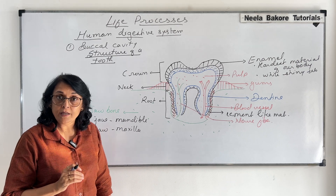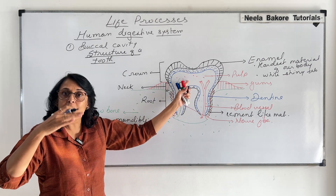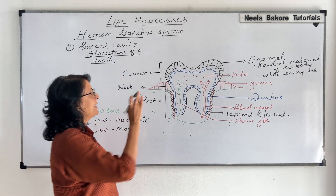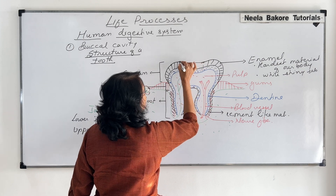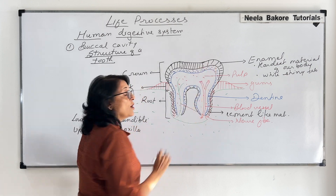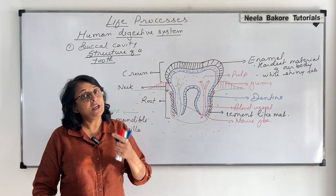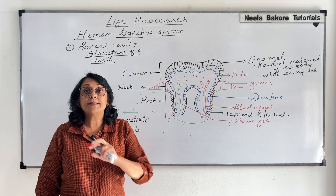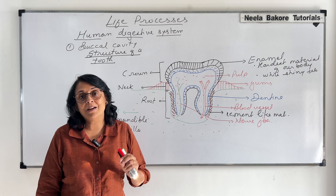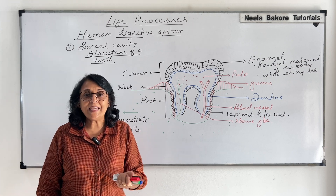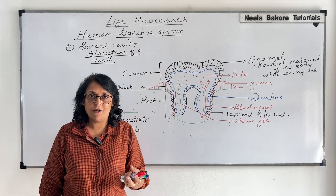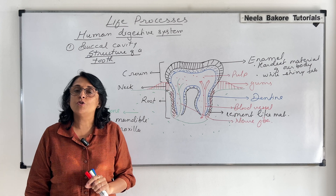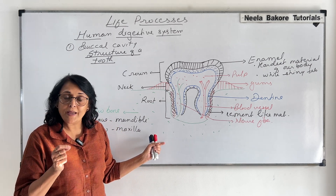Once the enamel is dissolved, whatever you eat — cold or hot — it is going to hit the living part, and when it hits the living part it causes pain. Tooth pain is very bad, and that is why we need to take care of our teeth. The best way is to brush after eating anything. Chocolates are blamed because they are sticky and remain stuck in our teeth longer, but it is any food item that causes caries. Whatever you eat, brush your teeth properly so that all those food particles are removed.